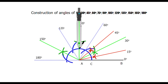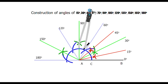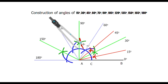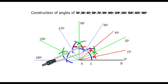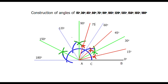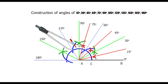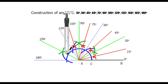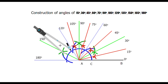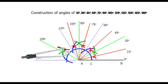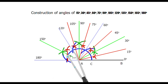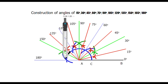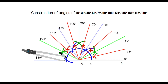Now we bisect 60 and 90 degree angle to get a 75 degree angle. Now we will bisect 90 and 120 degree angle to get a 105 degree angle. Now we will bisect 150 and 180 degree angle to get a 165 degree angle. Now we will bisect 120 and 150 degree angle to get a 135 degree angle.